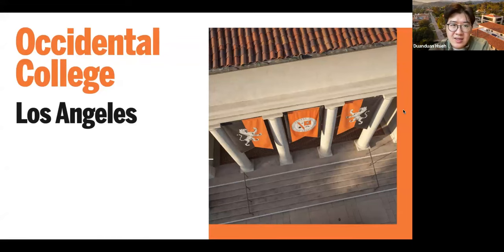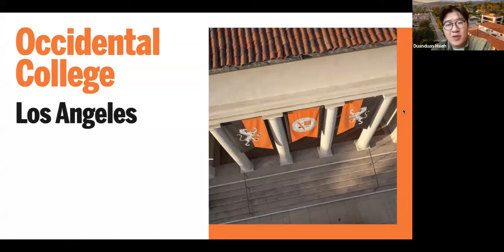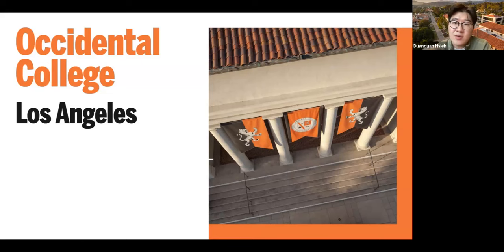We're located in Los Angeles. Here are two fun facts: Oxy is the second oldest institution in Southern California — we were founded before the first road was paved in LA and before the first movie was shot in Hollywood. We were founded in 1887. The longest sports rivalry in Southern California is not USC and UCLA — it's actually Occidental College and Pomona College. The first college founded in Southern California was USC, the second was Oxy, and the third was Pomona.